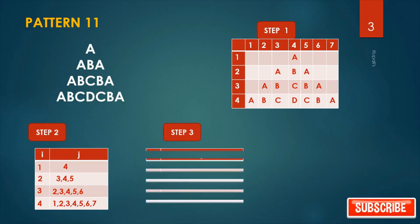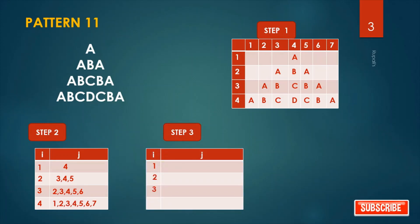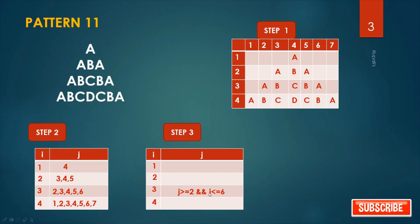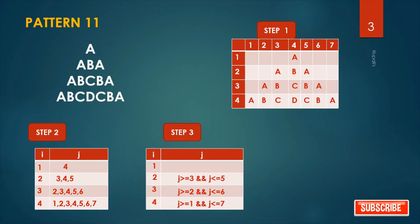Step number three: write the row numbers with conditions. When i is three, j is from two to six; when i is two, j is from three to five. We can write: when i is three, j >= 2 and j <= 6; when i is two or four, j >= 1 and j <= 7; j >= 3 and j <= 5; and j >= 4 and j <= 4.